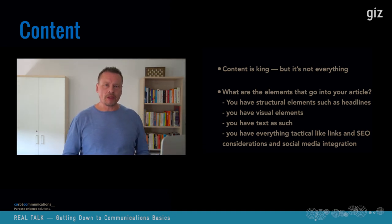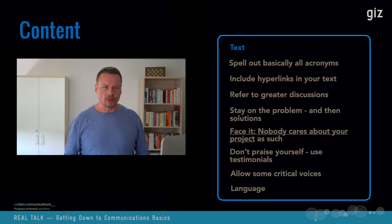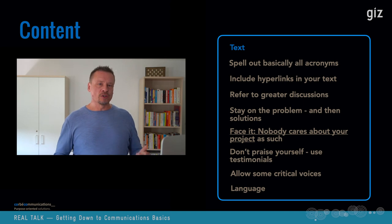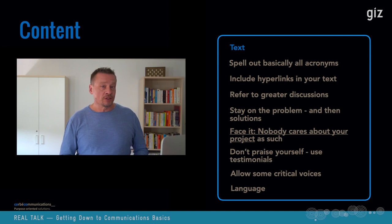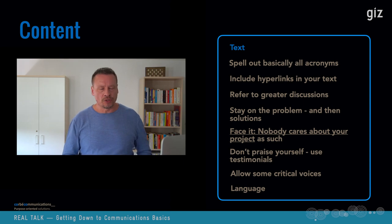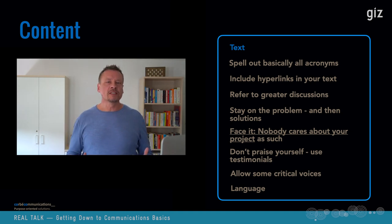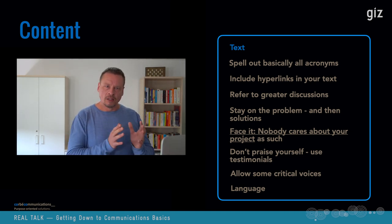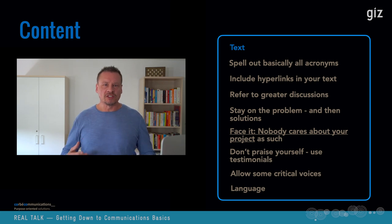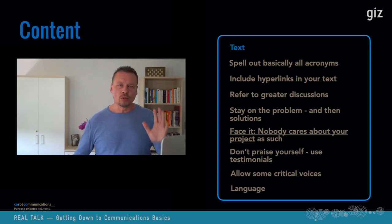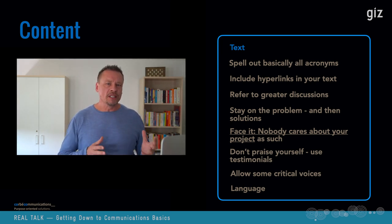Looking at the text part beyond strategy and structure: first, spell out all acronyms. There are two reasons — it's easier to comprehend and people don't get annoyed by having to remember an acronym they'll never see again. Secondly, relevance to search engines: if you repeat 'natural resources management' ten times because it's part of your project title rather than putting it in an acronym, search engines will recognize this must really be about that subject.